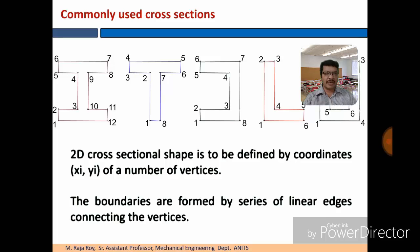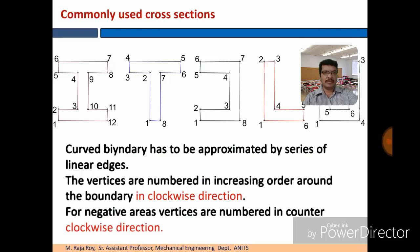2D cross-section shape is to be defined by coordinates of number of vertices. These coordinates are indicated as x1, y1, x2, y2, so on. The boundaries are formed by series of linear edges connecting the vertices. Curved boundaries have to be approximated by series of linear edges. The vertices are numbered in increasing order around the boundary in the clockwise direction. For negative areas, vertices are numbered in the counterclockwise direction.